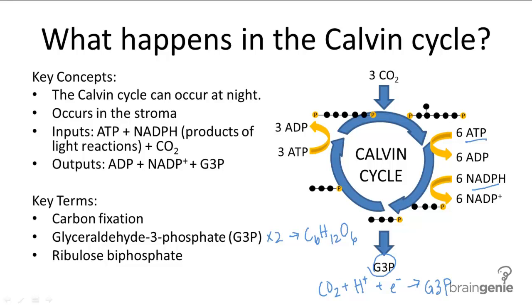Each of three CO2 atoms enter the cycle and are added on to ribulose biphosphate to form this sort of six-carbon molecule, and these six-carbon molecules then break in half through various processes to produce one G3P molecule. The rest of the carbon molecules are then used to regenerate the five-carbon ribulose biphosphate to start the cycle over again.